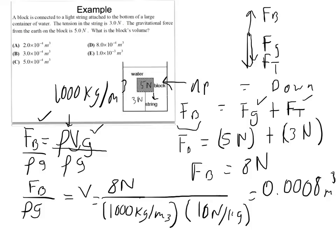And if we look up at our answers, they're all in scientific notation. So let's move the decimal until there's only one number in front of it. 1, 2, 3, 4. So that's 8 times 10 to the negative 4th meters cubed. Look at that. And we're done.